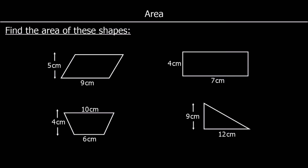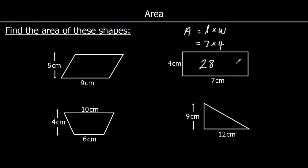Now we're looking at area. We're going to find the area of each of these shapes. Let's start with the rectangle — it's got a length of four and a width of seven. The area of a rectangle is length times width, so that's seven times four, which is 28. We measure area in squares, and since the lengths are in centimetres, the area will be in centimetres squared.